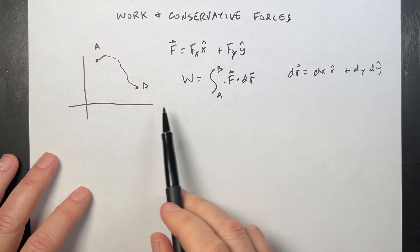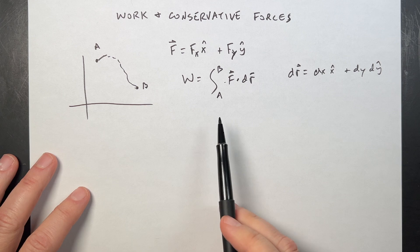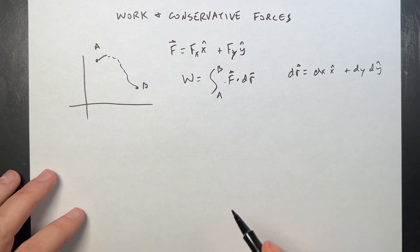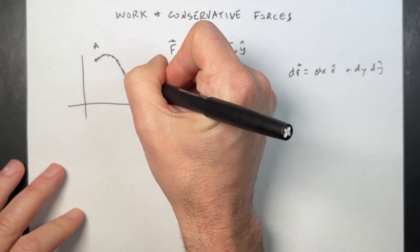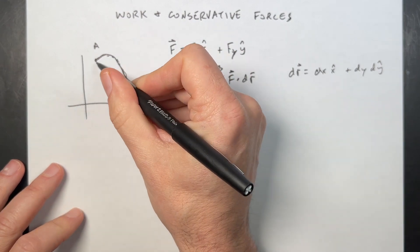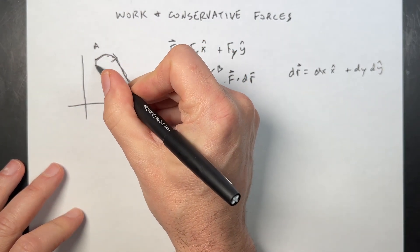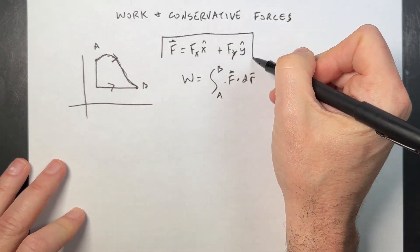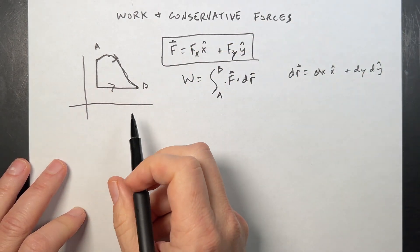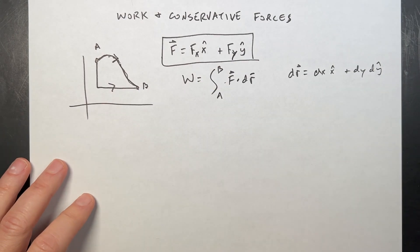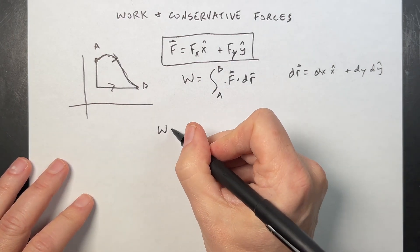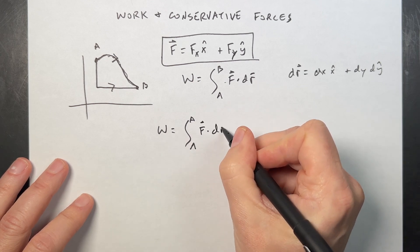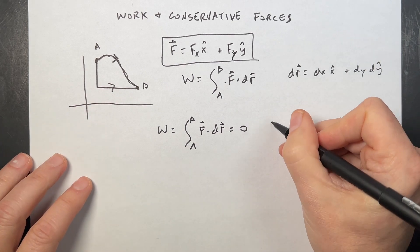You have to know something about the path so you can know something about the limits of integration. The important thing is that if the force is conservative, then the work done does not depend on the path — it only depends on the endpoints. Another way of saying that is that the work from A back to A of F dot dr is zero. So the work around a closed loop is zero.